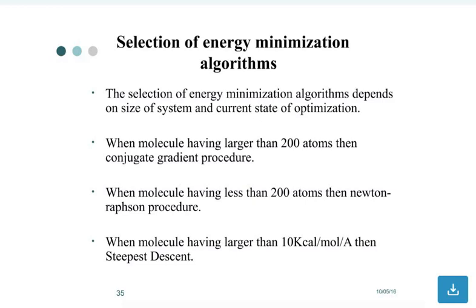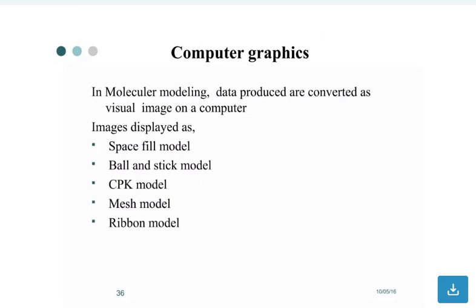Selection of energy minimization algorithms depends on the size of the system and current state of optimization. When molecules have larger than 200 atoms, then use conjugated gradient procedure. When molecules have less than 200 atoms, then use Newton-Raphson procedure. When molecules have larger than 10 kcal per mole energy, then use steepest descent.